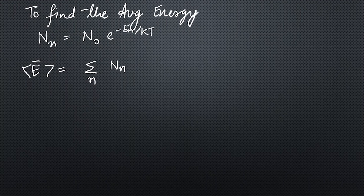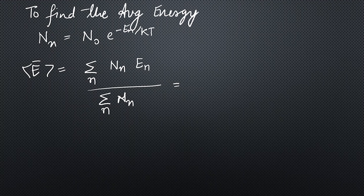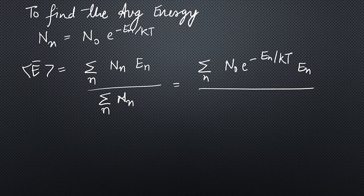The average energy expression is: the total energy — which is Nₙ (the number of atoms at the nth level) times Eₙ (the energy of the nth level), summed over all n — divided by the total number of atoms N. Substituting the expression for Nₙ gives N₀ · exp(−Eₙ/kT) · Eₙ in the numerator and N₀ · exp(−Eₙ/kT) in the denominator.